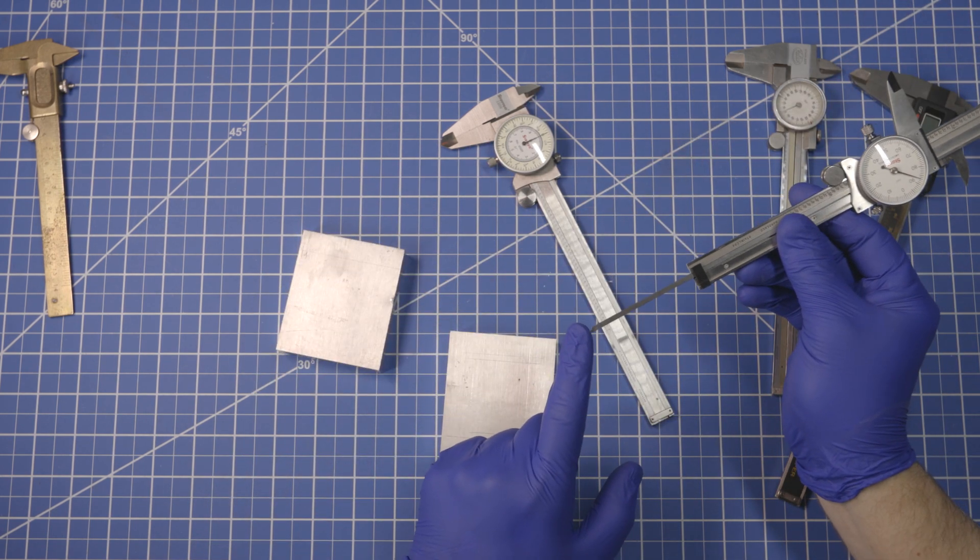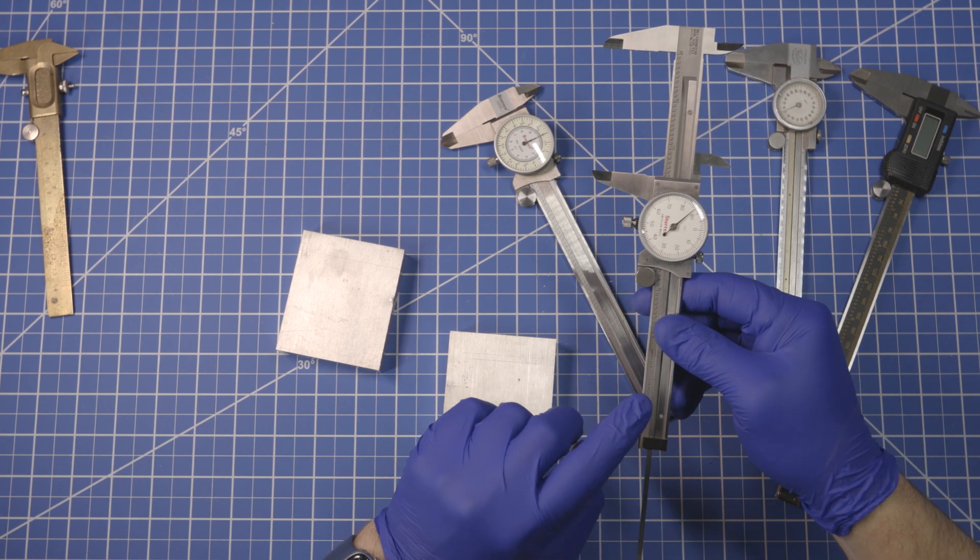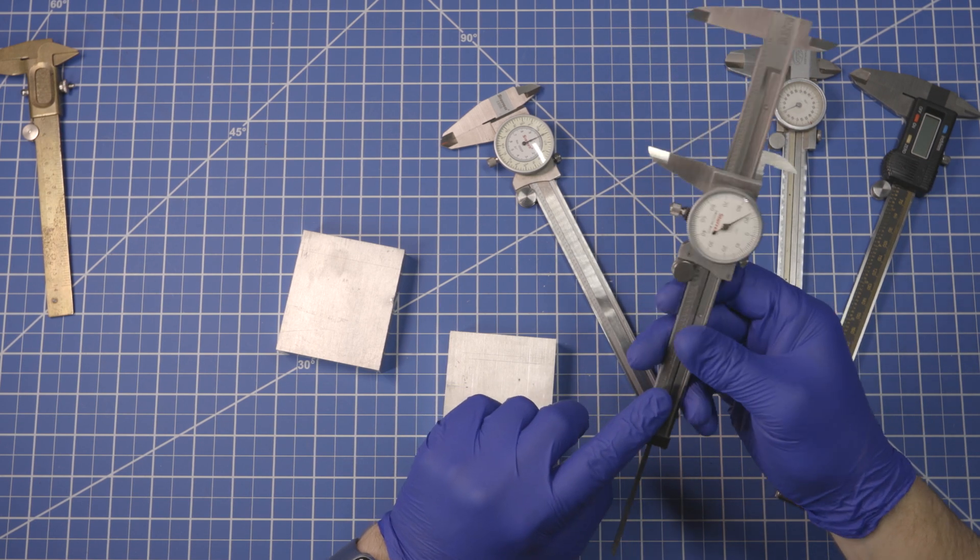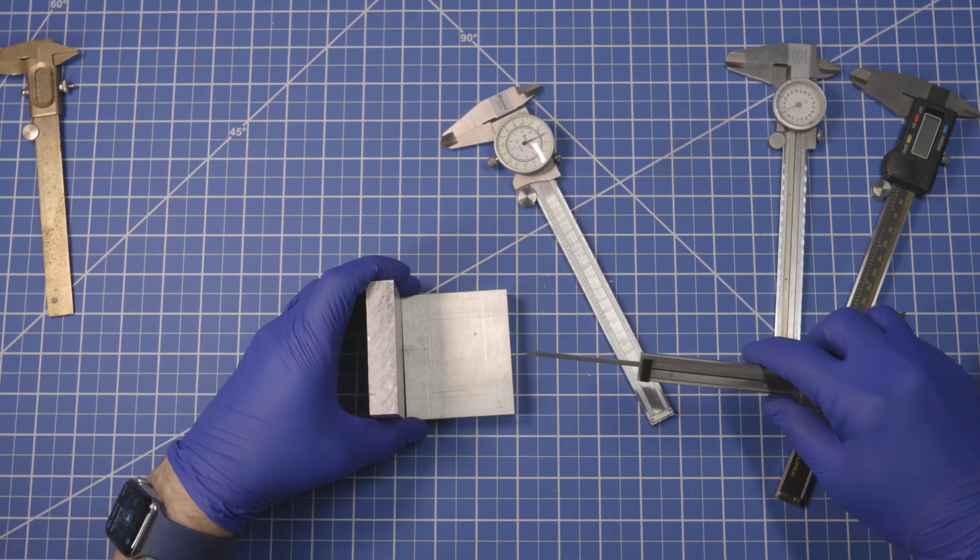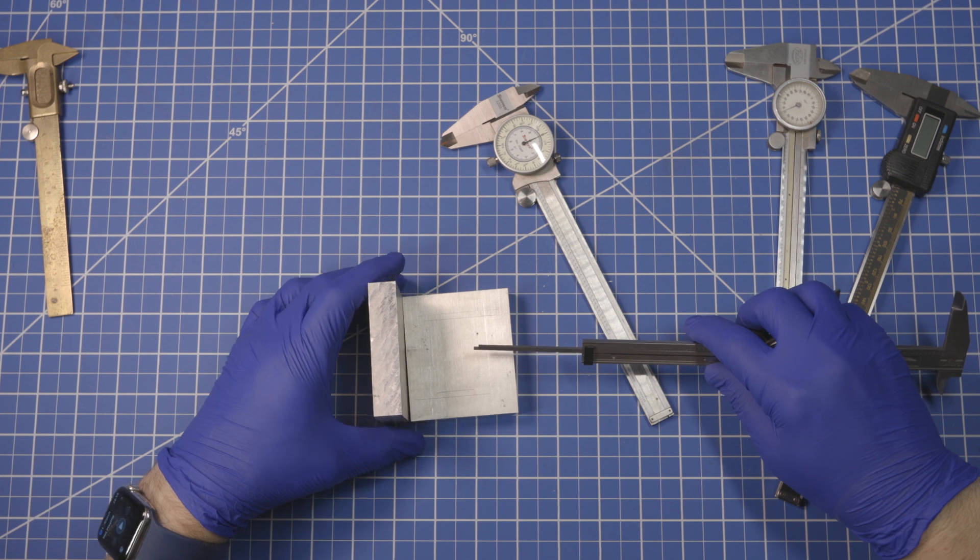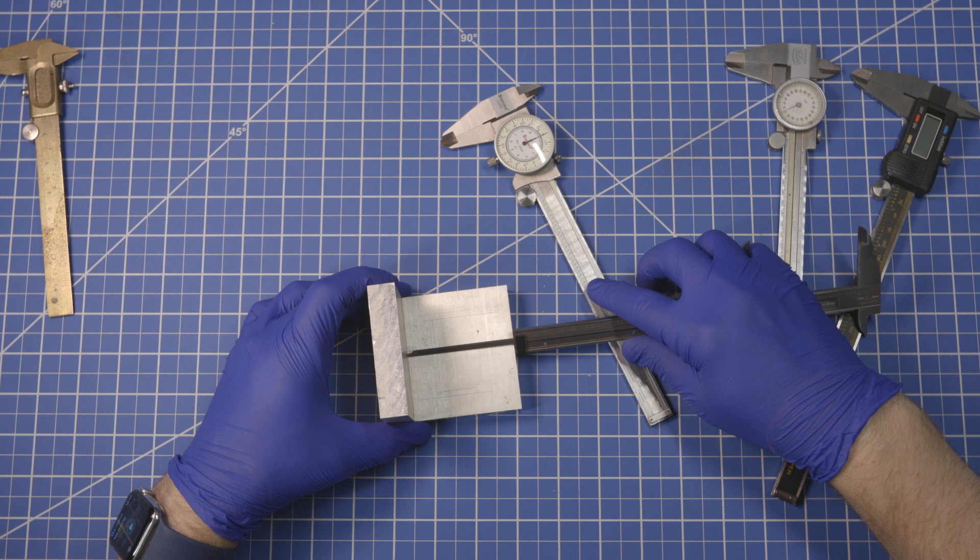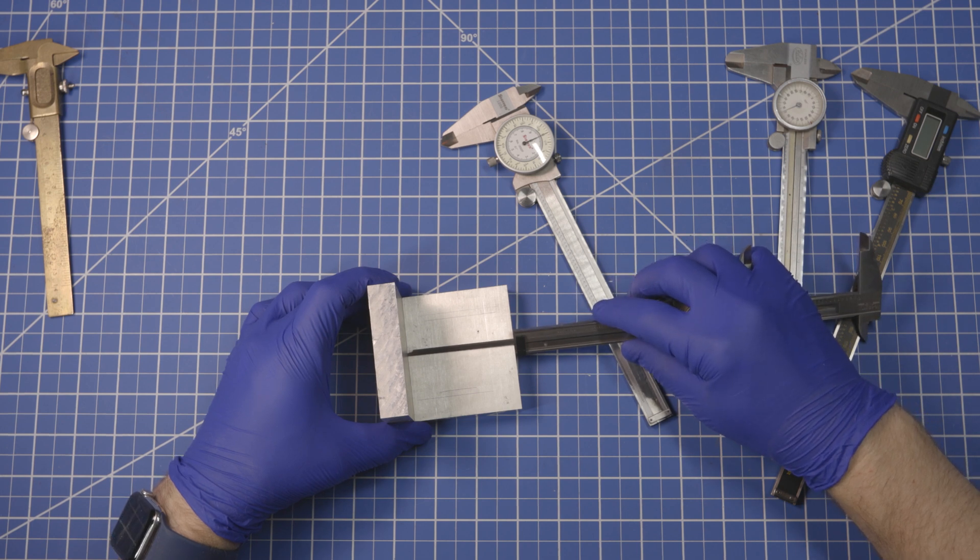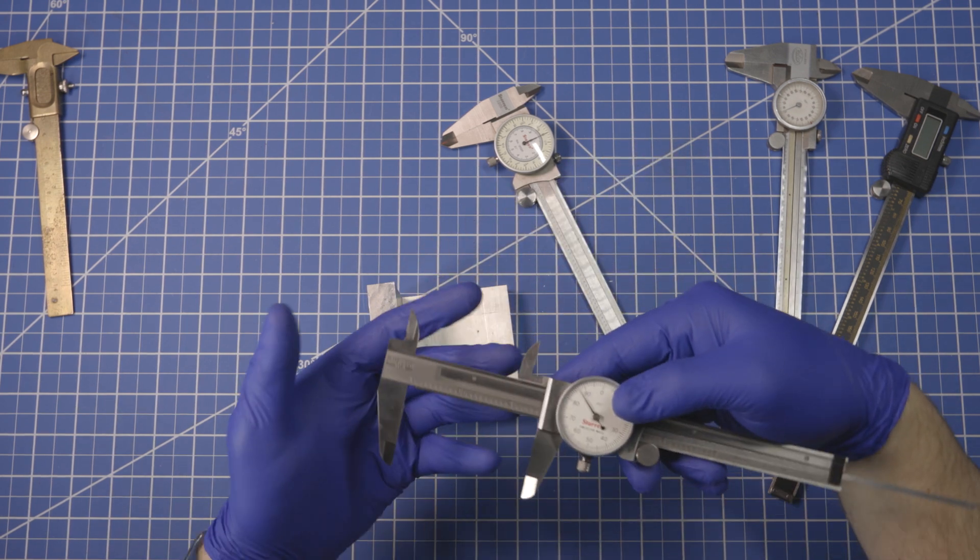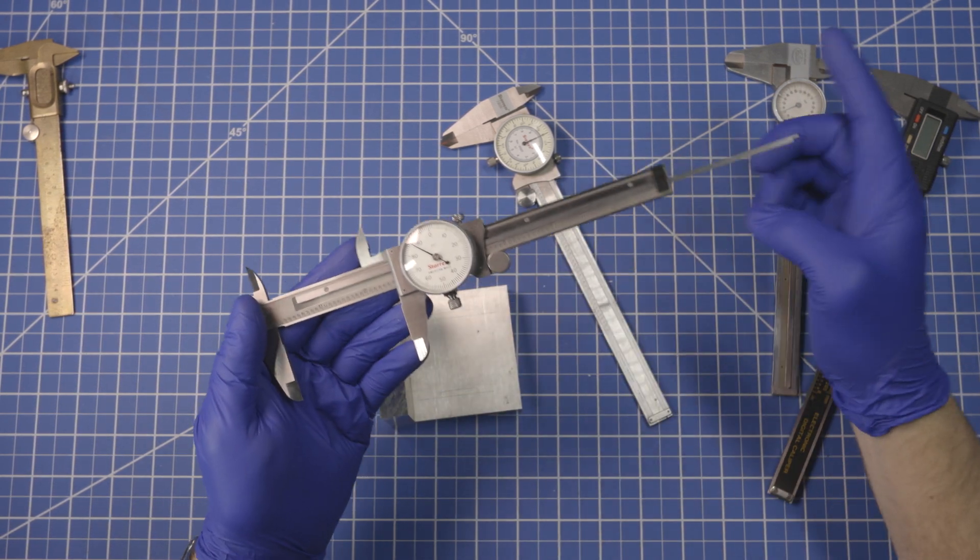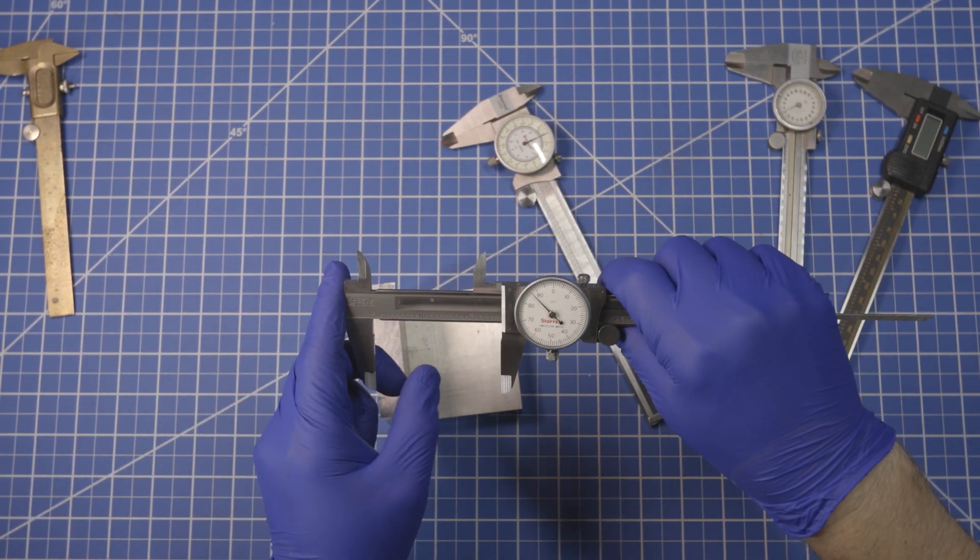And the last functionality we have is using this depth gauge, which uses this beam, which is riding in the scale. You can use this depth scale to measure down into a hole or whatever. Of course, each of these measurements is reflected in the other one. This depth is the same as this width, which is the same as this width. That's the whole purpose of these calipers.